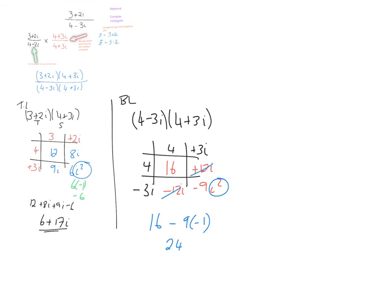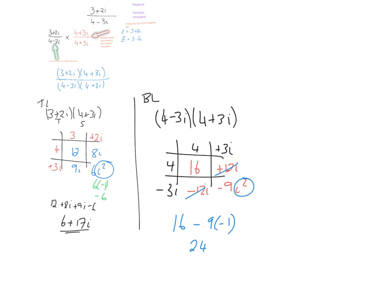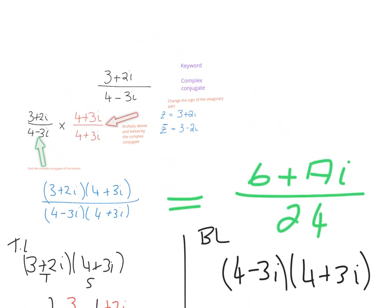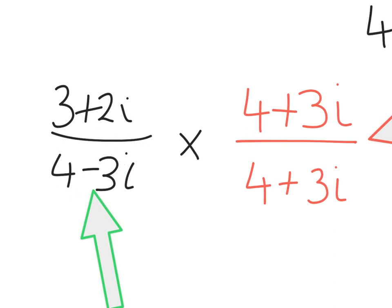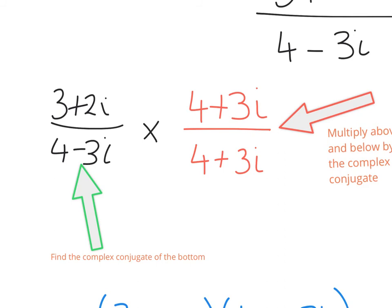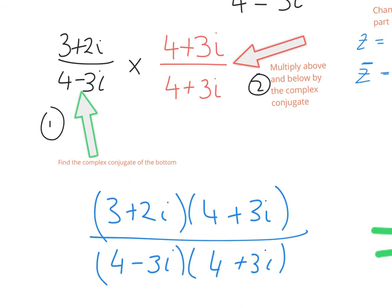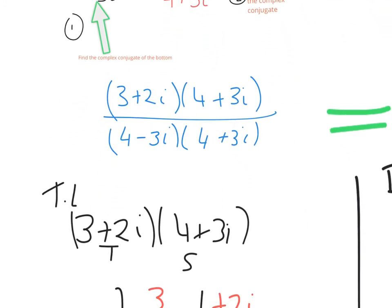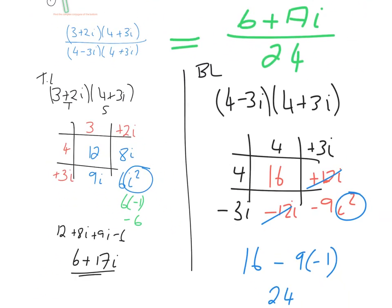Going back to the question: the top line gives 6 plus 17i and the bottom line gives 25, so three plus two i divided by four minus three i equals 6 plus 17i all over 25. To summarise: step one, find the complex conjugate of the bottom number; step two, multiply above and below by that conjugate; then do box multiplication on top and bottom, and divide top over bottom.